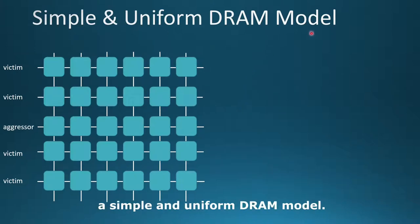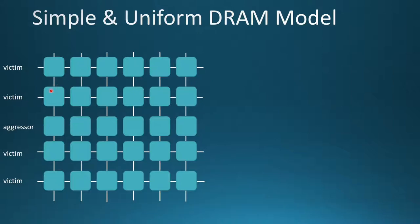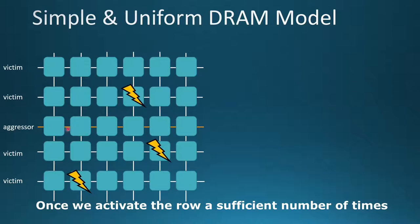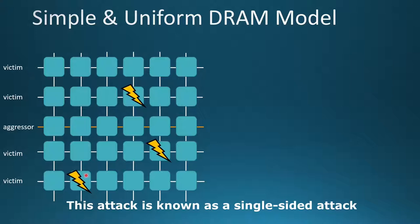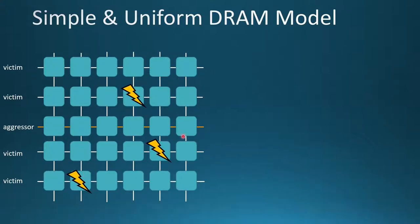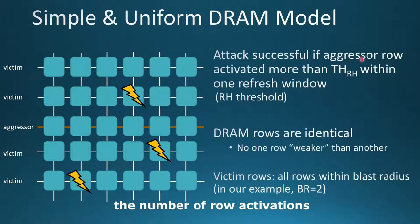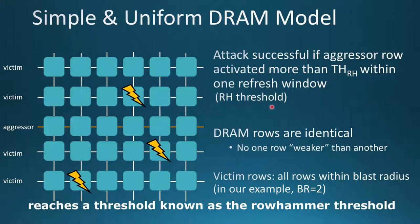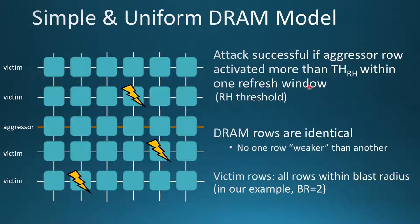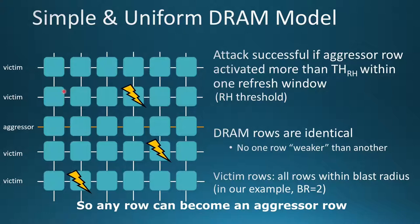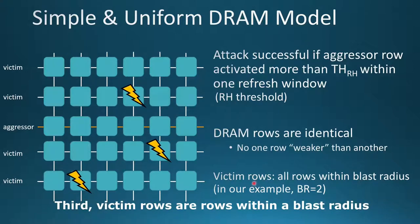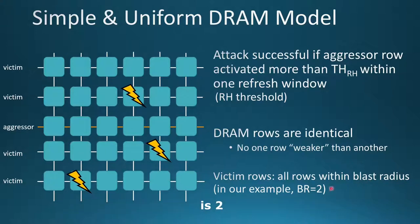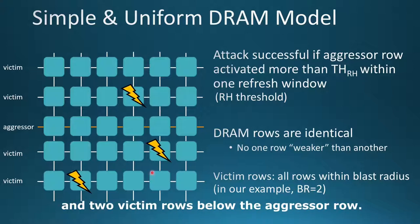Most row hammer defenses assume a simple and uniform DRAM model. We use the same uniform DRAM model in our work. Here I'm showing a pictorial representation of DRAM in which we are activating one aggressor row. Once we activate the row a sufficient number of times, bit flips will occur on victim rows. This attack is known as a single-sided attack because there is just one aggressor row activated continuously. The attack is successful only when the number of row activations of the aggressor row reaches a threshold known as the row hammer threshold. This threshold needs to be reached within one refresh window. Second, all DRAM rows are identical — there is no row weaker than another. Any row has the same threshold, so any row can become an aggressor row, and if the number of row activations exceeds that single uniform global threshold, the attack succeeds.